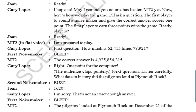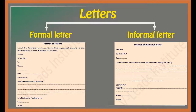Next question — listen carefully: 'What date in history did the Pilgrims land at Plymouth Rock?' Second noisemaker buzz — John: '1620.' Gary Lopez: 'I'm so sorry, that's not an exact enough answer.' First noisemaker bleep — MT2: 'The Pilgrims landed at Plymouth Rock on December 21st.' Now we'll continue the lesson tomorrow. We'll see the two types of letters which we studied today at the start of class.